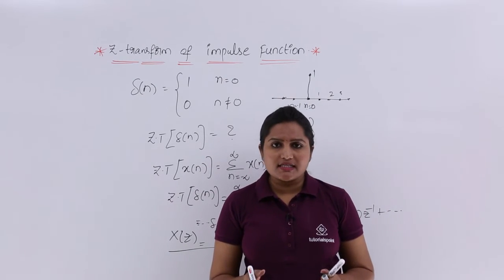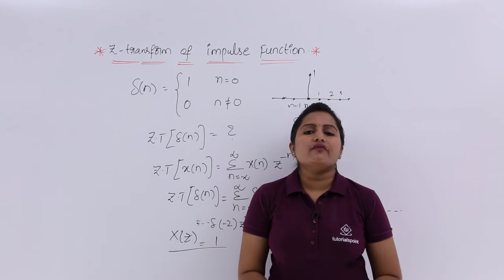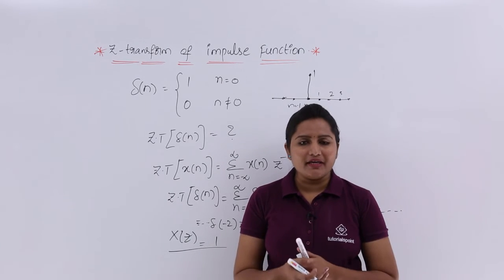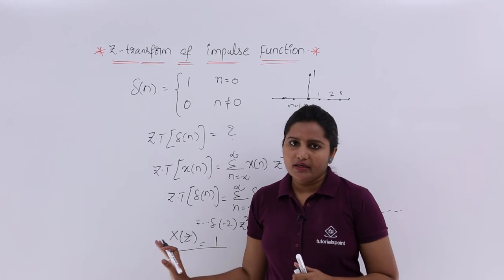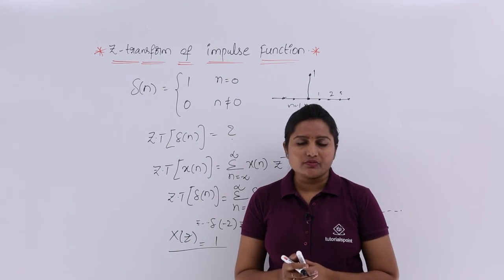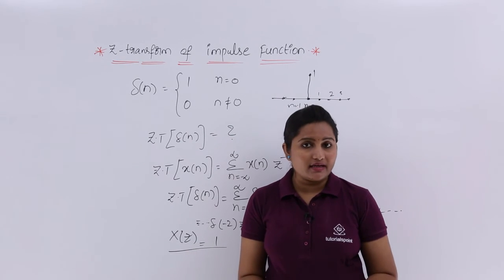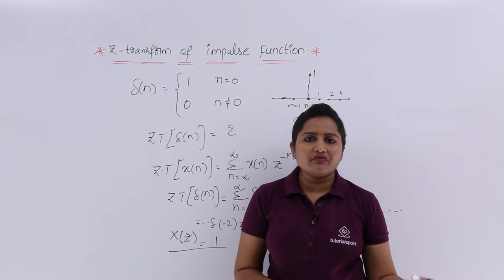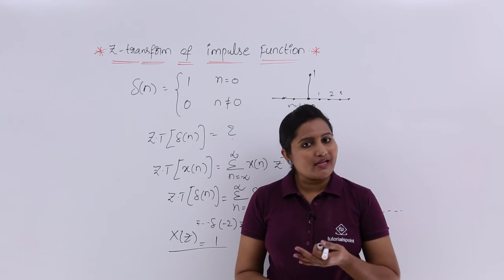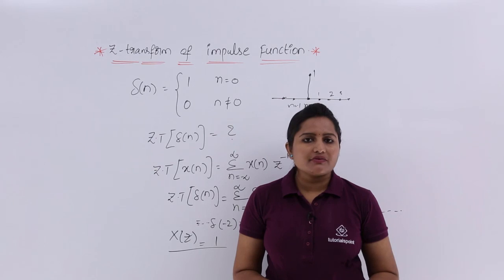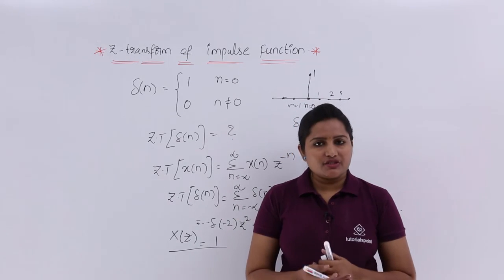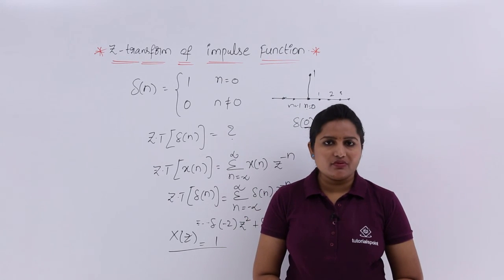As mentioned in introductory classes on Fourier transforms, any transform of the impulse function equals 1. This holds in Z transforms as well: the Z transform of δ(n) equals 1. This is a fundamental result. For one-mark questions: the Laplace transform of δ(t) = 1, the Fourier transform of δ(t) = 1, the Discrete Fourier transform of δ(n) = 1, and the Z transform of δ(n) = 1.